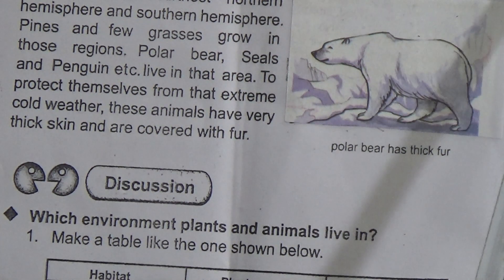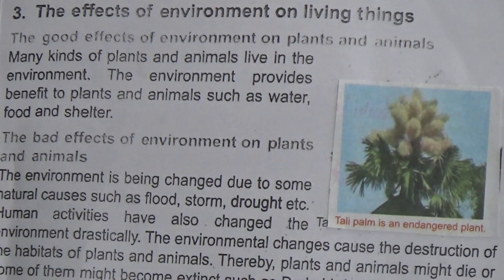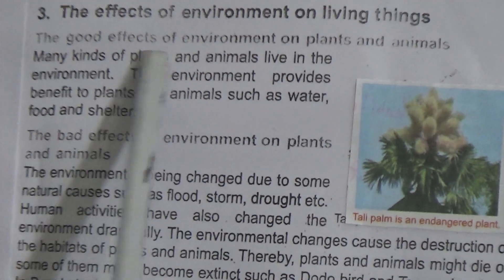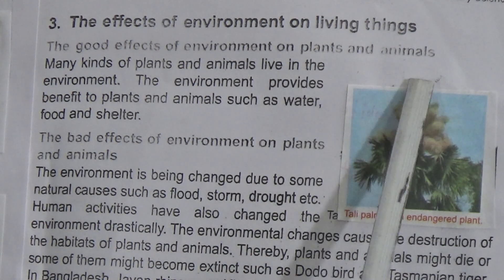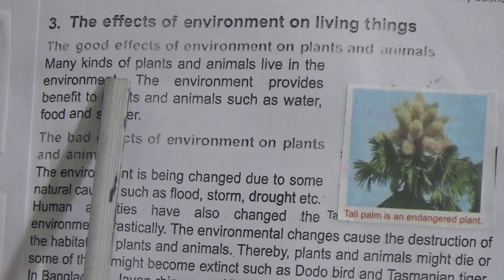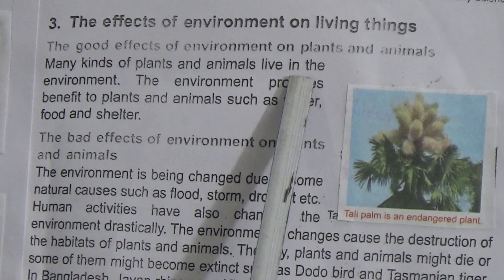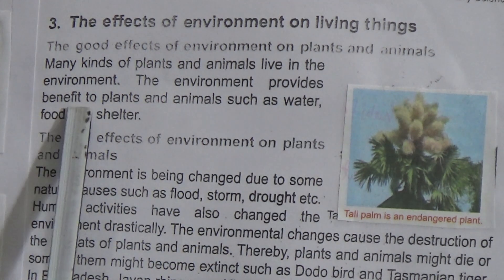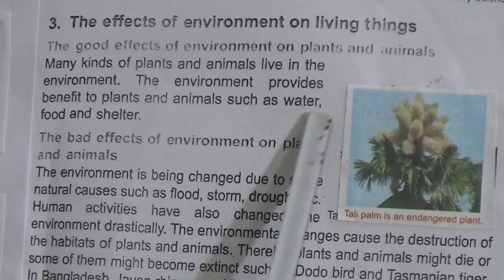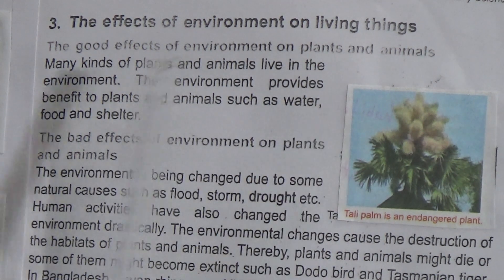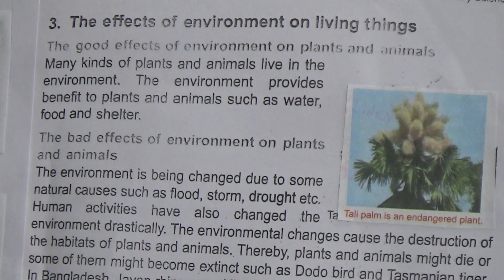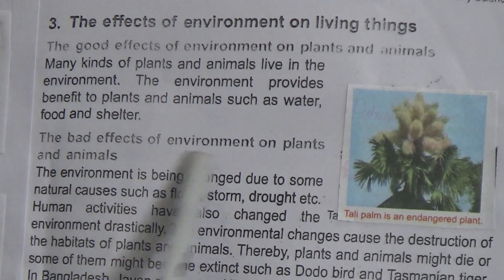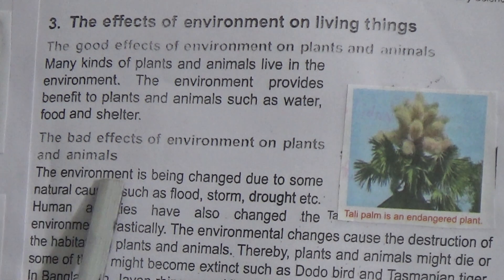Now, the effects of environment on living things. The good effects of environment on plants and animals: many kinds of plants and animals live in the environment. The environment provides benefits to plants and animals such as water, food, and shelter.